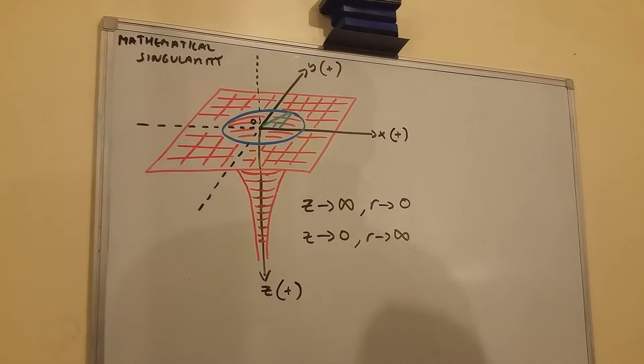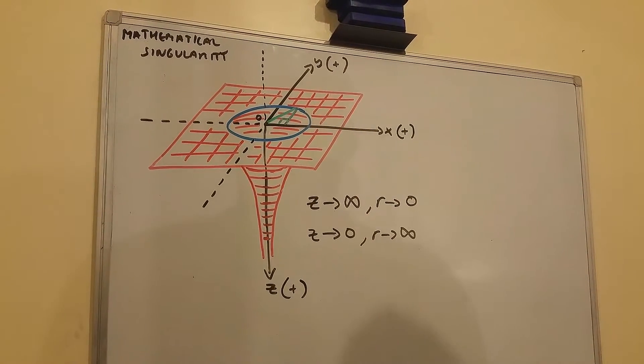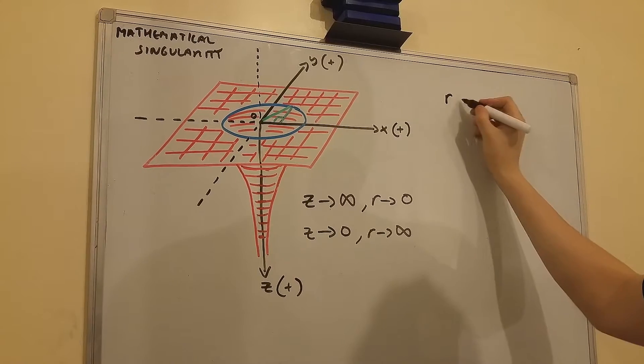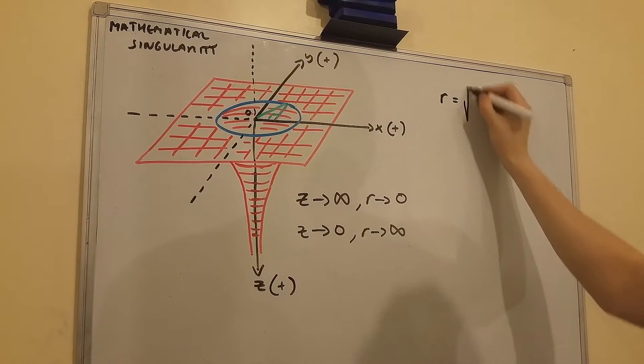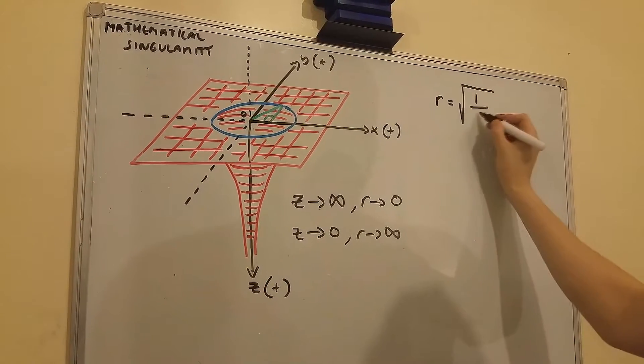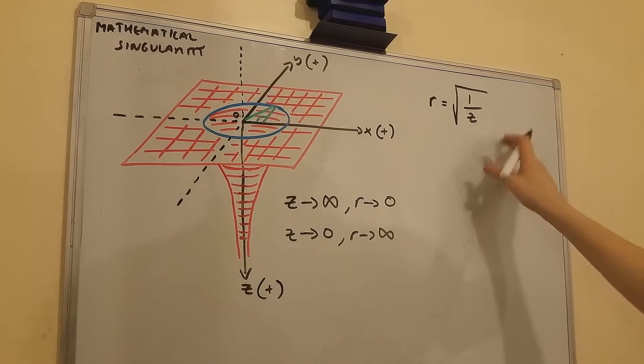So the equation of this mathematical singularity is actually r equals the square root of 1 over z.